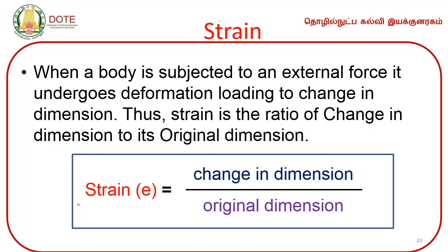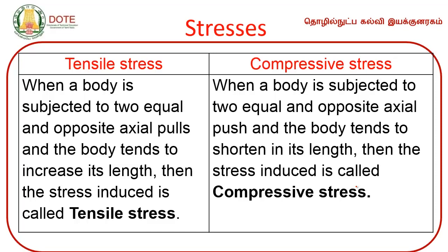Strain: when a body is subjected to an external force, it undergoes deformation leading to a change in dimension. Strain is the ratio of change in dimension to its original dimension. There are two types of stress: tensile stress and compressive stress. Tensile stress occurs when the body is subjected to axial pulls, and compressive stress occurs due to compressive force.